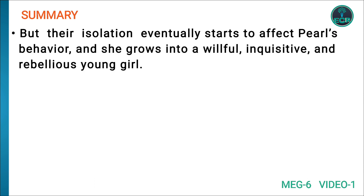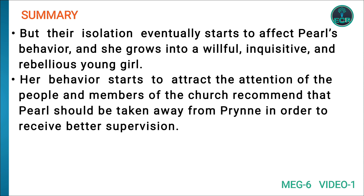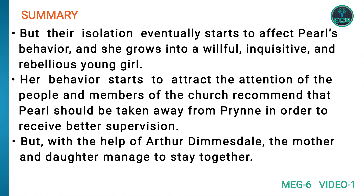In the atmosphere of alienation, her daughter Pearl is her only companion. Her isolation eventually starts to affect Pearl's behavior, and she grows into a willful, inquisitive, and rebellious young girl. Her behavior attracts the attention of the people, and members of the church recommend that Pearl should be taken away from Hester in order to receive better supervision. But with the help of Arthur Dimmesdale, the mother and daughter manage to stay together.